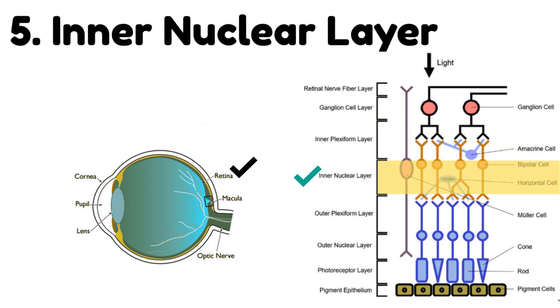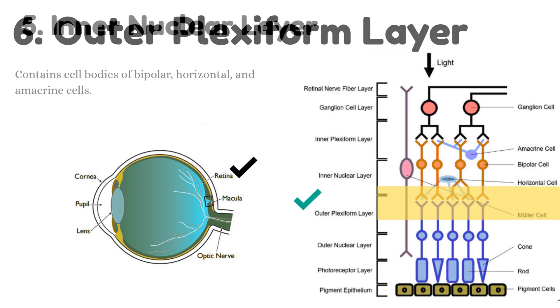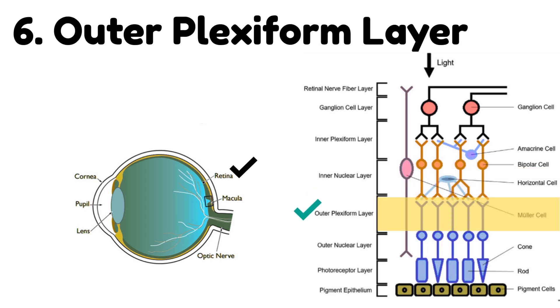Number 5: Inner nuclear layer. This layer contains cell bodies of bipolar cells, horizontal cells, and amacrine cells.